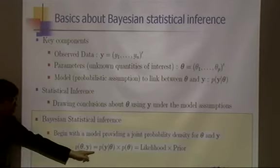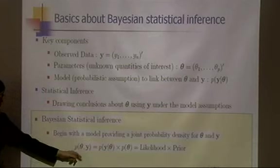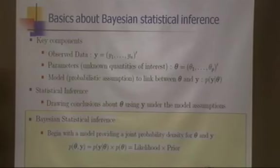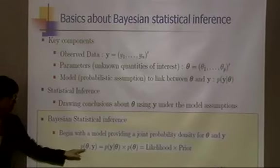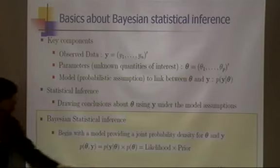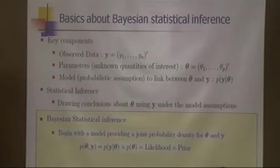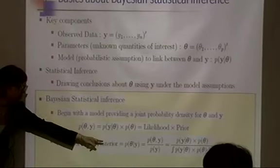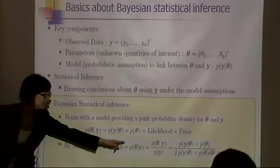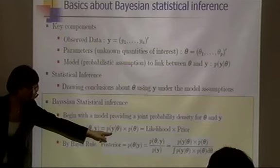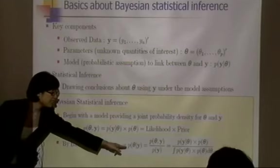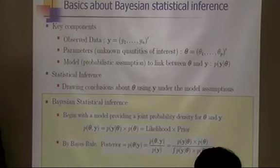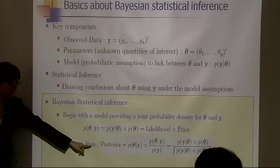We call p(y|theta) the likelihood and p(theta) the prior probability. In order to have a joint distribution of parameters and data, we need a probabilistic assumption for both parameters and data given parameters. Using Bayes' rule, you can get the posterior density of parameters given data by dividing the joint density by the marginal density of the data.